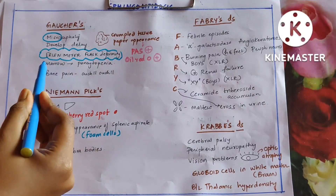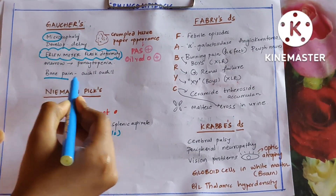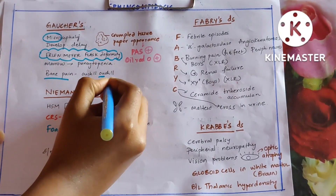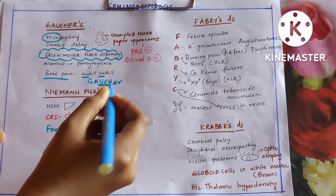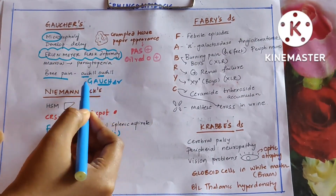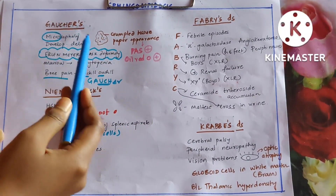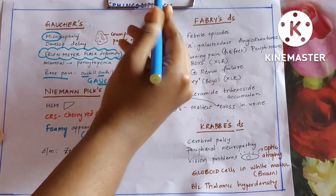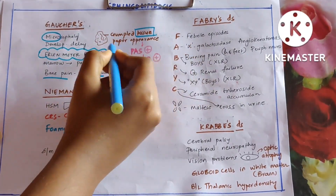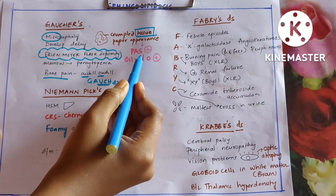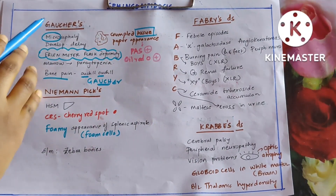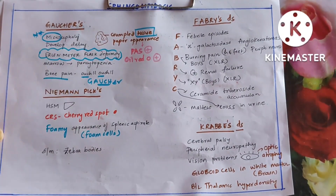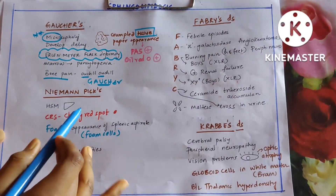In Gaucher's, the marrow is affected, so there is pancytopenia and bone pain. Ouch-ouch is Gaucher's — so when someone is in pain you give a tissue paper — crumpled tissue paper appearance is seen in Gaucher's disease, which is PAS-positive and oil red also positive.